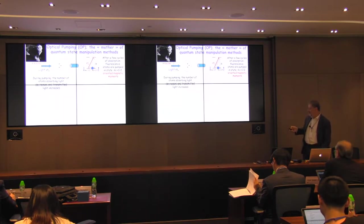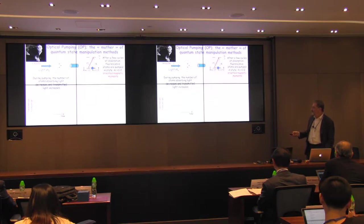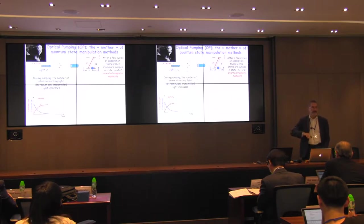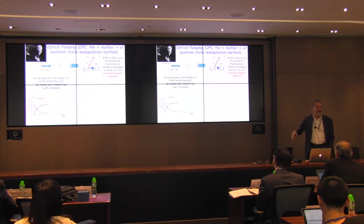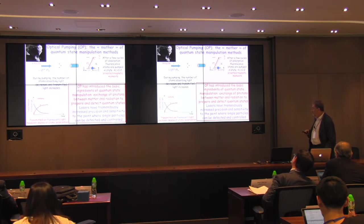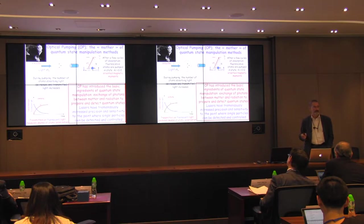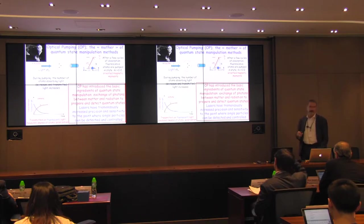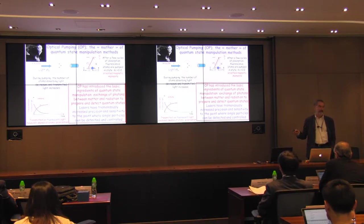Light is used to manipulate the state, but as you see, light is also used to detect: if you plot the transmitted light or the fluorescent light as pumping proceeds, the transmitted light increases because the system can no longer absorb, and the fluorescent light decreases because the system can no longer scatter photons. Optical pumping introduced the basic ingredients of quantum state manipulation: exchange of energy and momentum between light and matter, used to prepare and detect quantum states. These experiments were done with classical light in the 1950s with huge numbers of atoms, but lasers have increased the precision to the point where these experiments are now performed with a single particle.